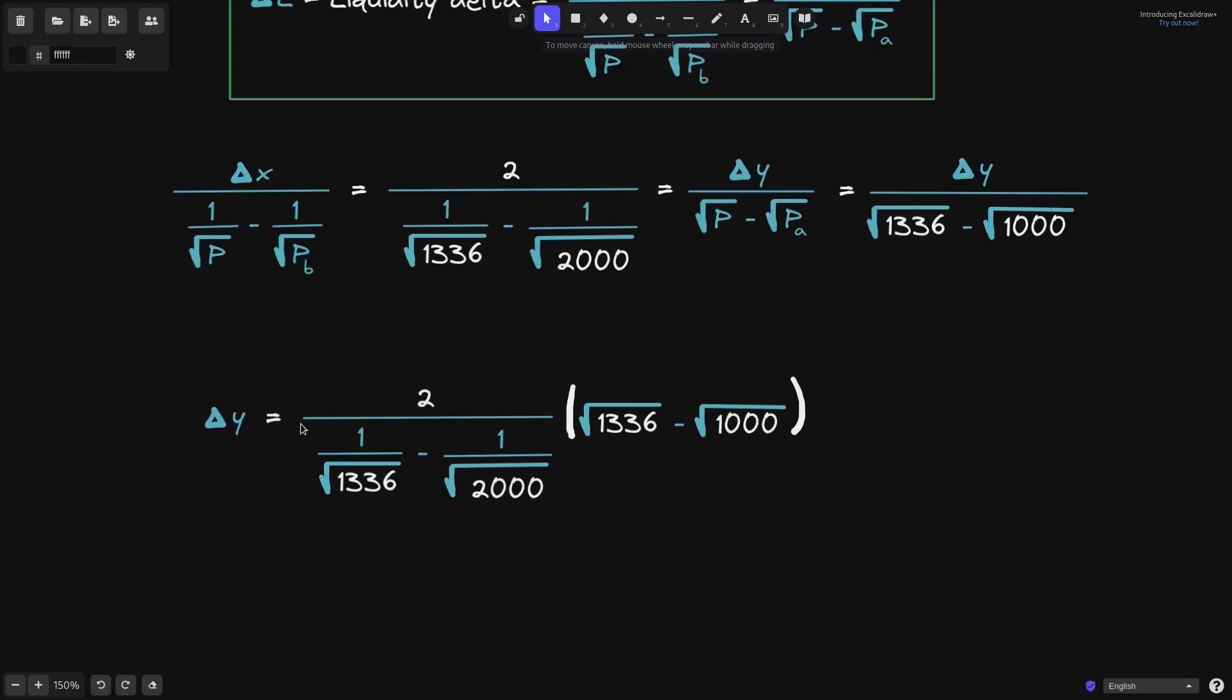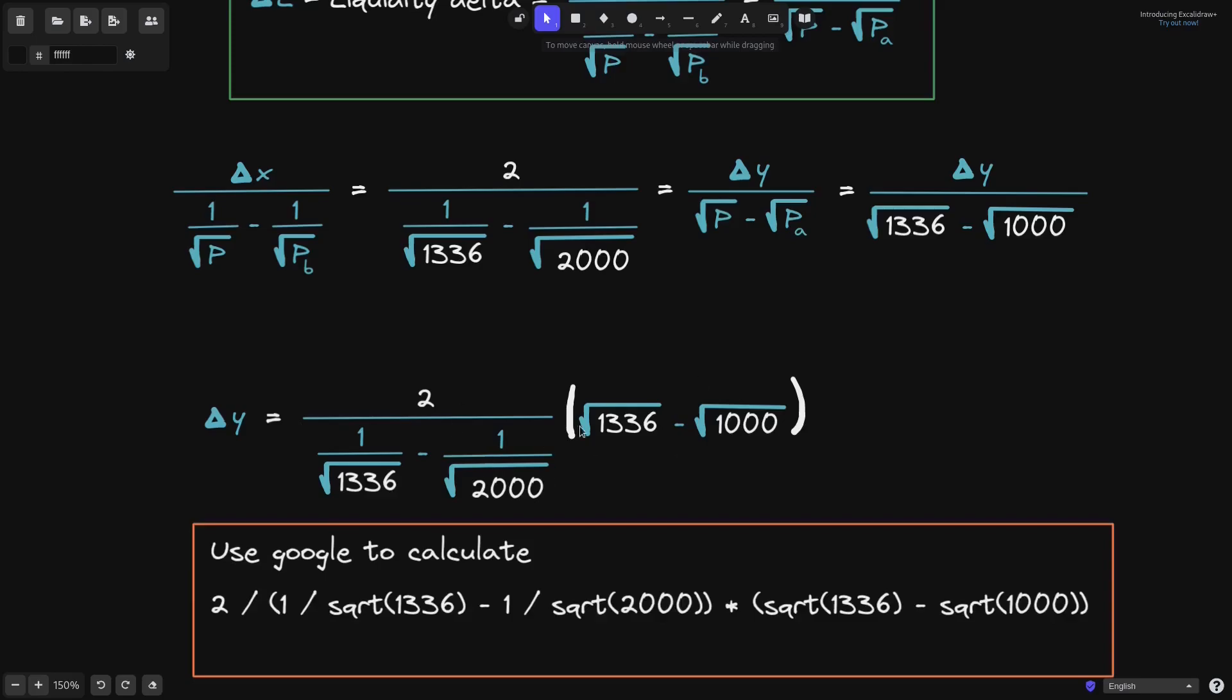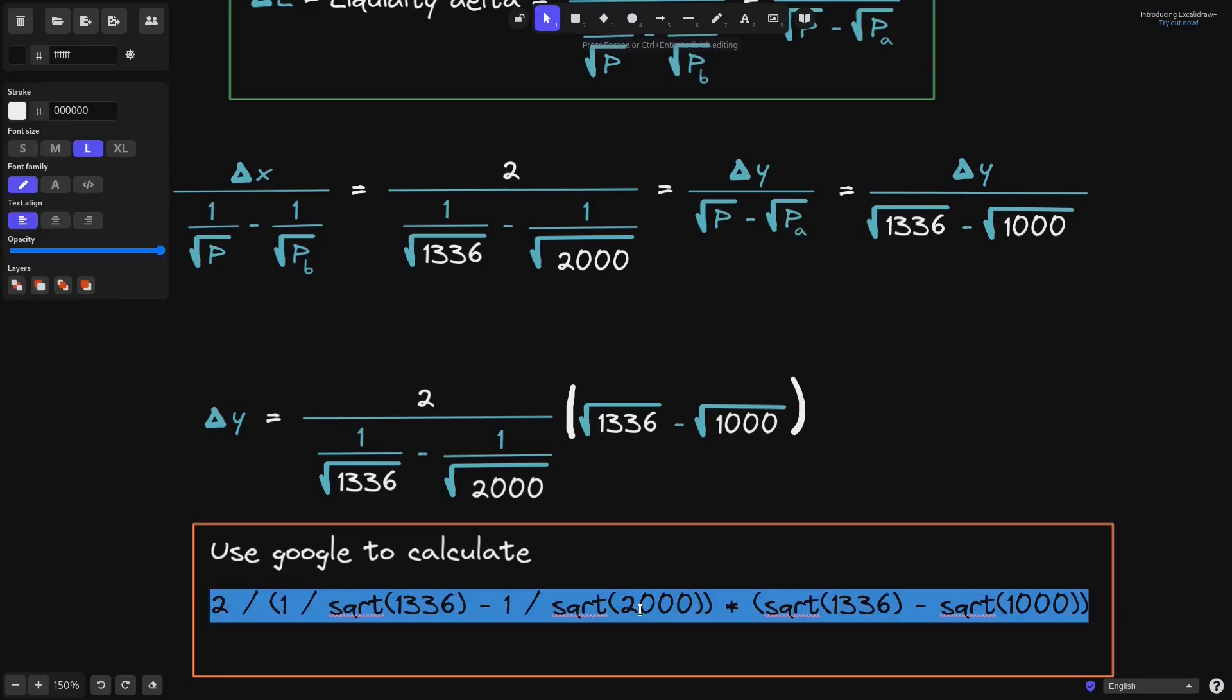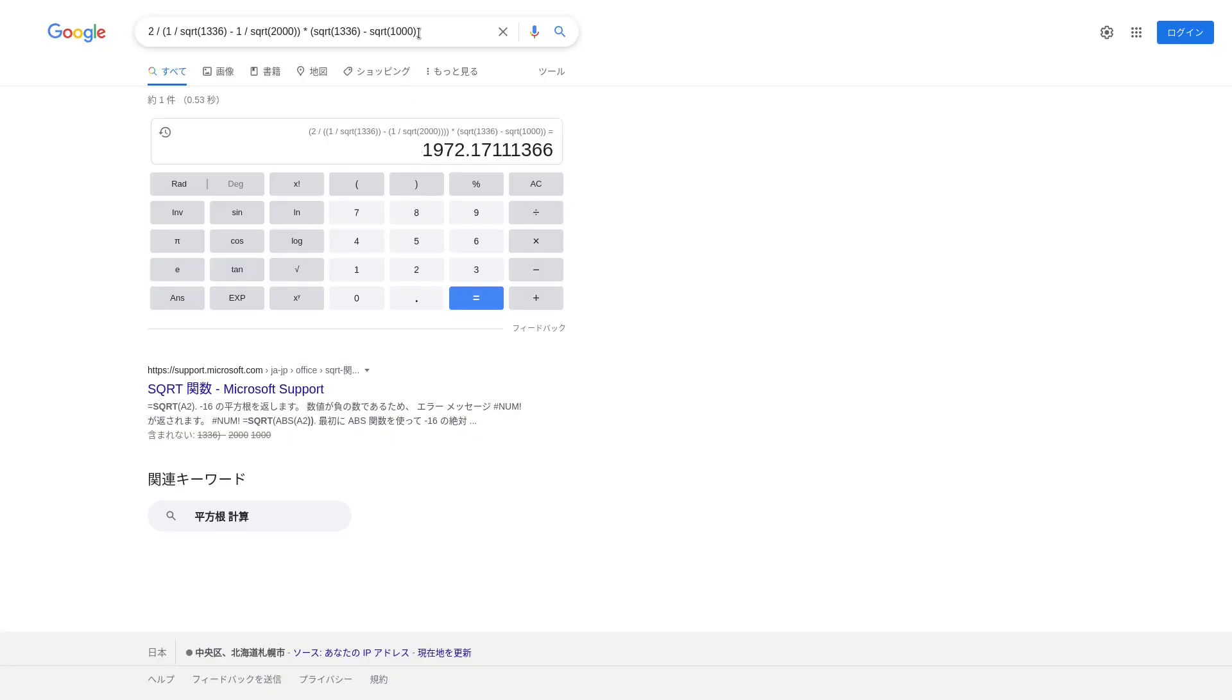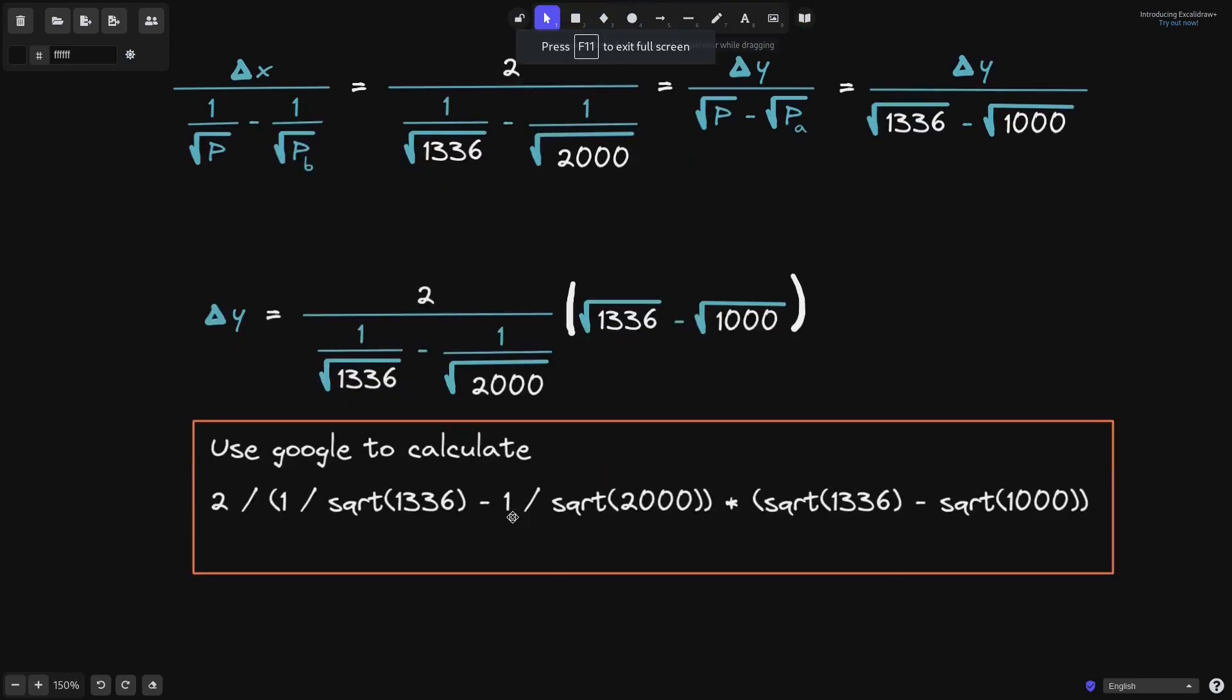Next, I'm going to use Google as my calculator to calculate this expression. So the equation that you see over here is the same exact equation that you see over here. I'll copy this equation and then calculate it using Google. Using Google, the calculation turns out to be 1,972.17.